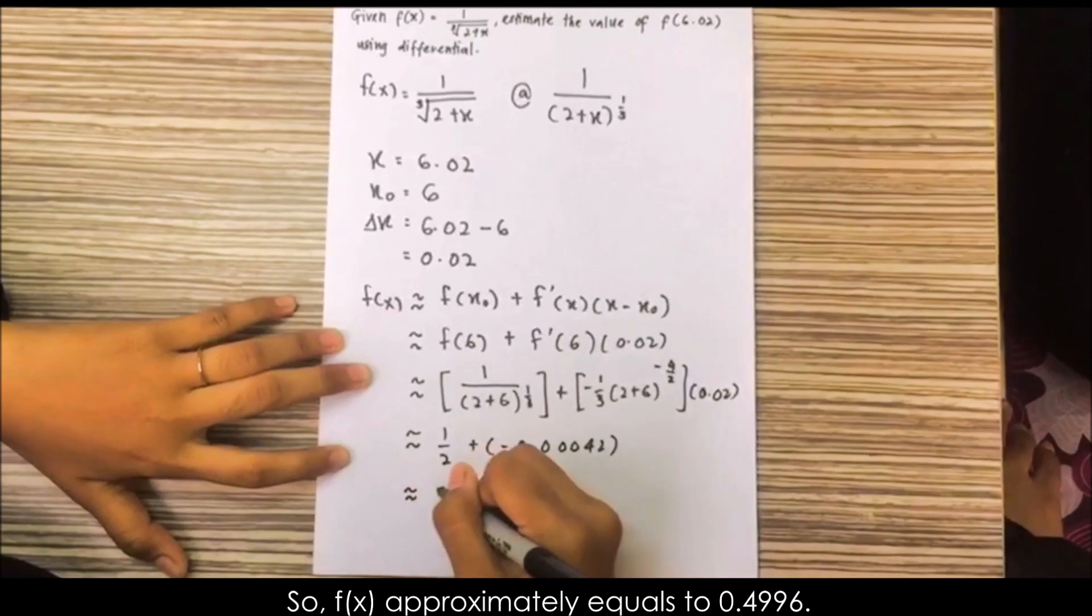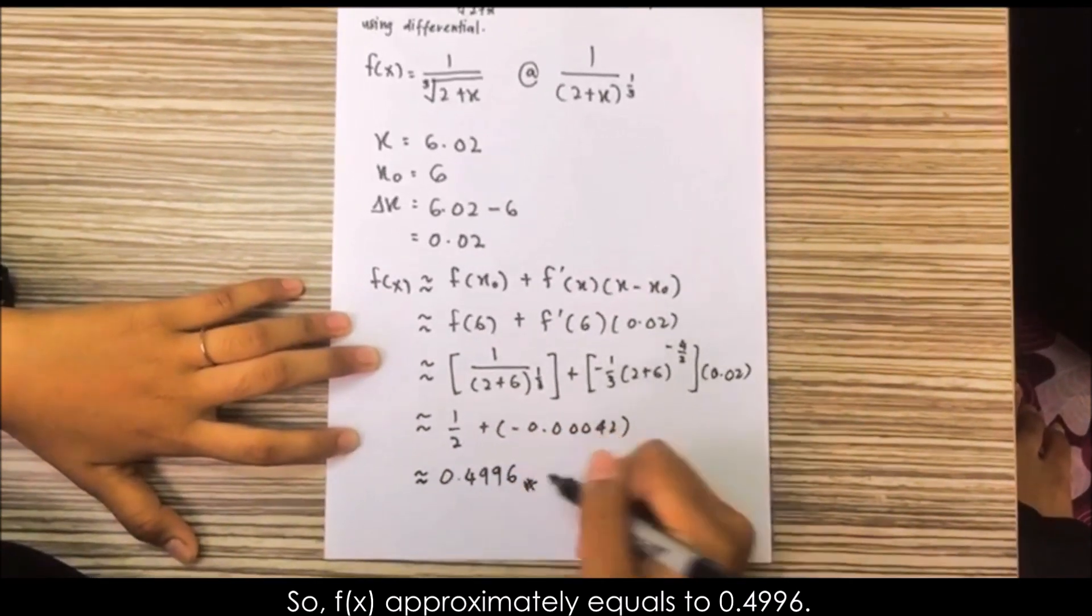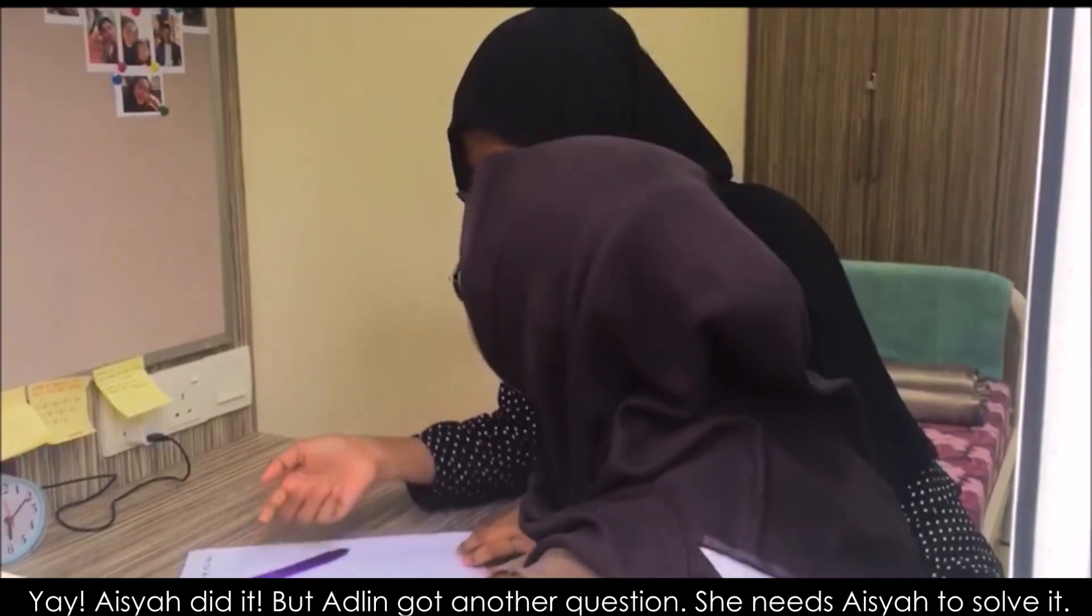So, f(x) approximately equals 0.4996. Yay, Aisha did it!